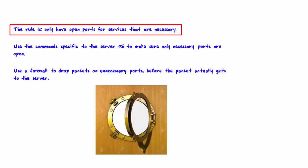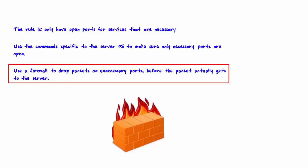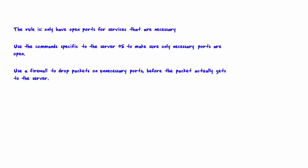Use the commands specific to the server OS to make sure only necessary ports are open. Each OS has specific commands you can use to see what ports are open. You can also use a firewall to drop packets on unnecessary ports before they ever reach the server. That is the end of step six.